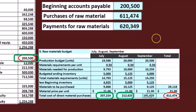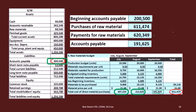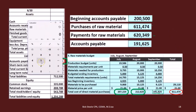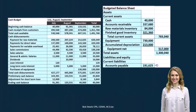Let's take out the calculator and actually do the calculation. If we take the $200,500 we started with, plus the $611,474 in purchases, minus the $620,349 we paid, we're going to end up with $191,625. And of course that is the purchases we made in September that are left in accounts payable, because we're going to pay them all off in the following month. So there's the $191,625.